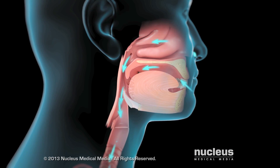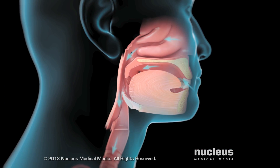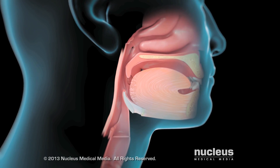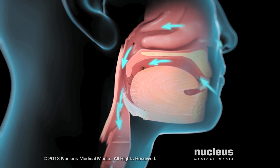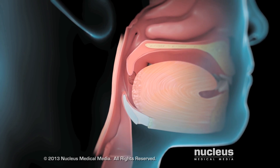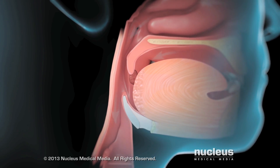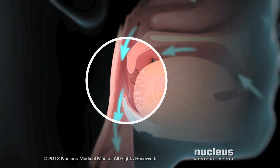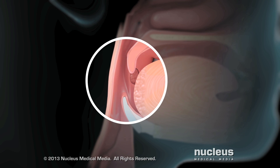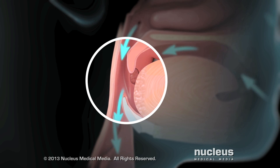Each time you breathe in, negative suction pressure pulls the soft tissues in your mouth and pharynx inward. The muscles in your pharynx respond by pulling the soft tissues outward again, which keeps your airway open.